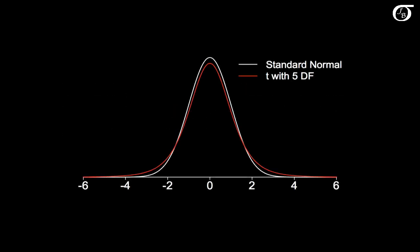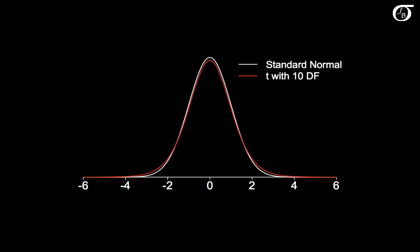Here I've plotted a standard normal distribution in white and a t-distribution with n-1 degrees of freedom in red. The t-distribution is very similar to the standard normal distribution, except that it has heavier tails and a lower peak. The exact shape depends on the degrees of freedom — here we had 5 degrees of freedom — but as the degrees of freedom increase, the t-distribution tends toward the standard normal. So as the sample size increases, the t-distribution will get closer and closer to the standard normal.